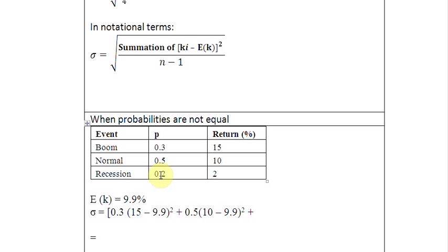Then put a plus sign again to incorporate the third possibility, that is of a recession, the probability of which is 20% or 0.2. Let's write here 0.2, and then multiply by the difference between the actual return, that is 2%, and the expected return 9.9%. So let's write here 2 minus 9.9, and then square it up, and close the square bracket.